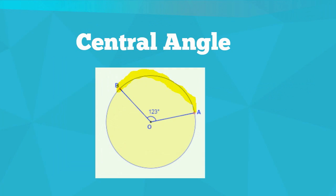The central angle of a circle is an angle with a vertex in the center of the circle with end points that lie on the circle.